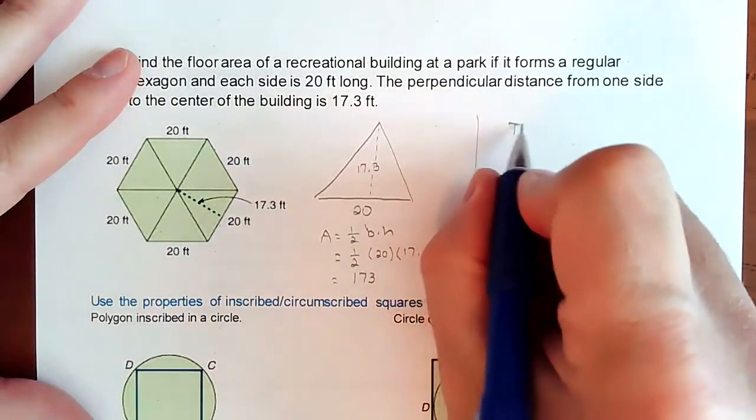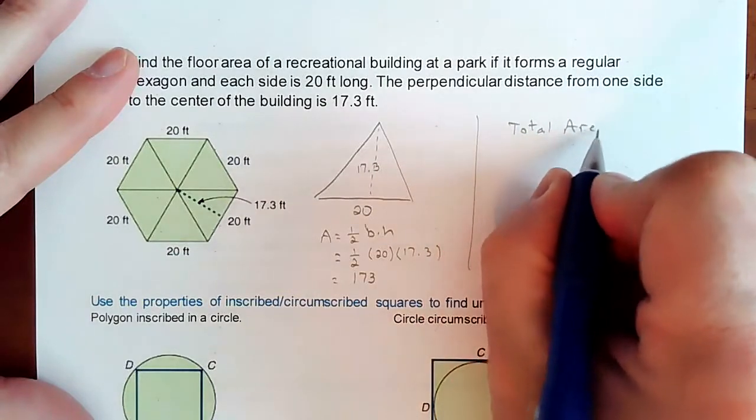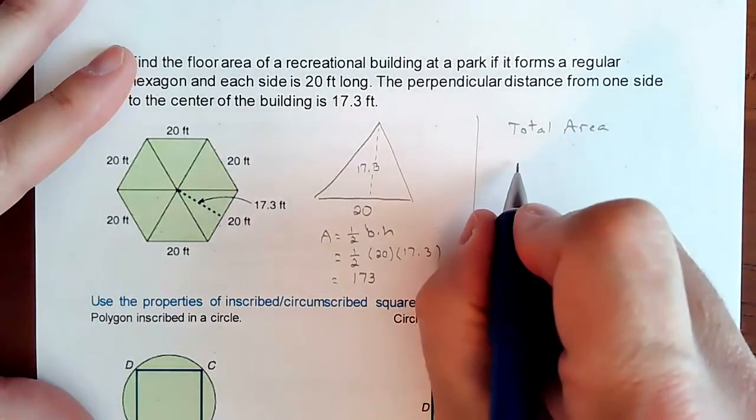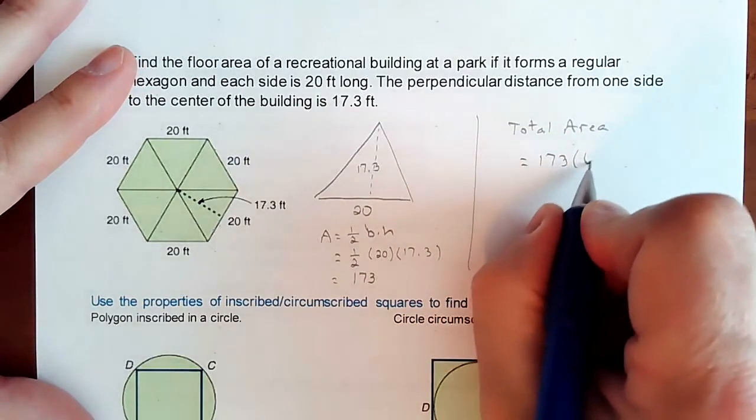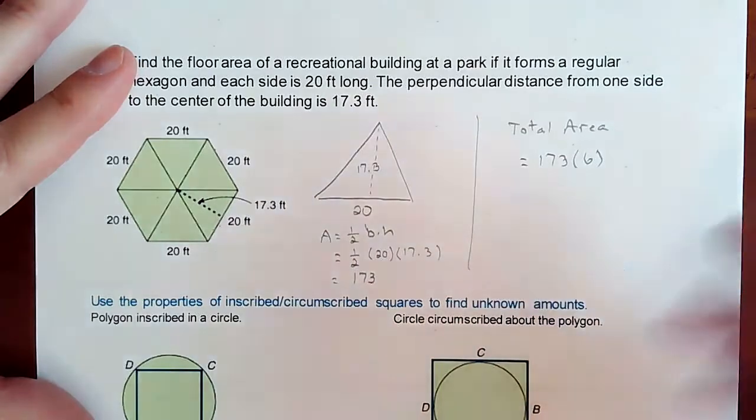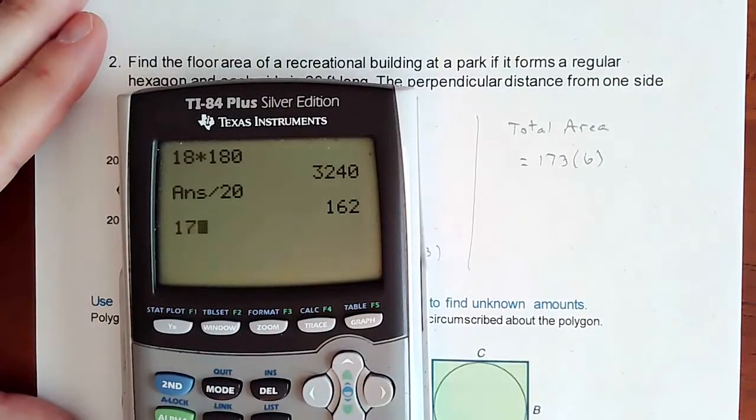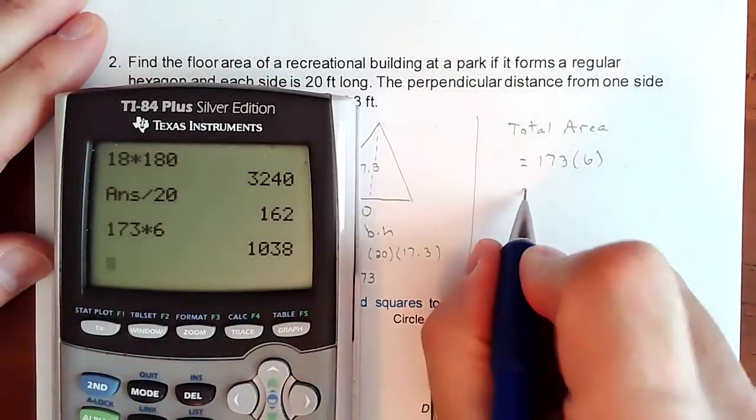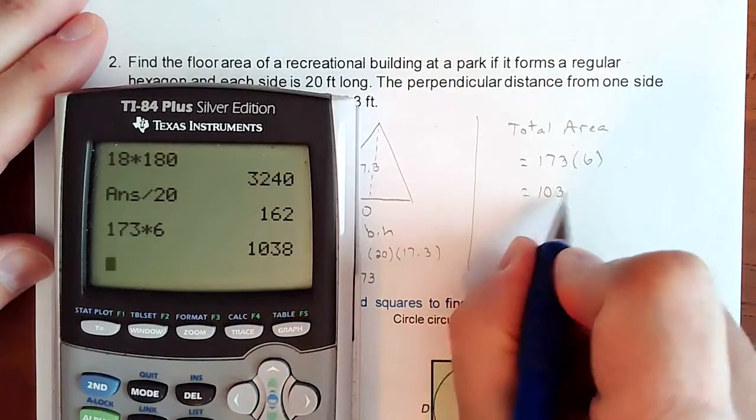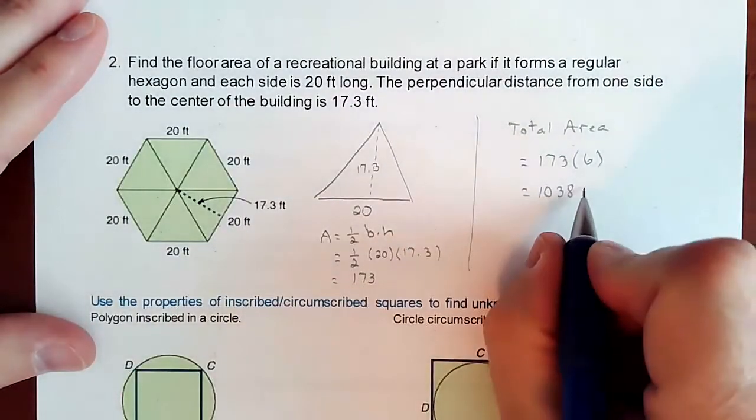Once you have that, your total area is, you have six of them. There's 173 in one triangle, but you have six that are exactly the same. If you multiply those two together, 173 times six, that gets you 1038 feet squared.